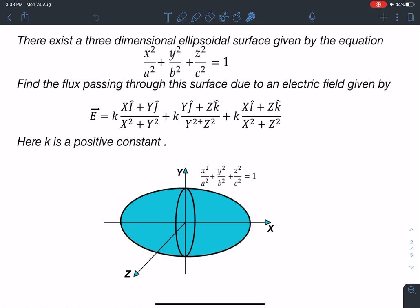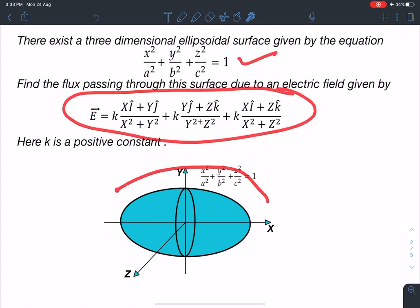So we have to calculate due to this electric field flux passing through this surface or you can say through this ellipsoid.